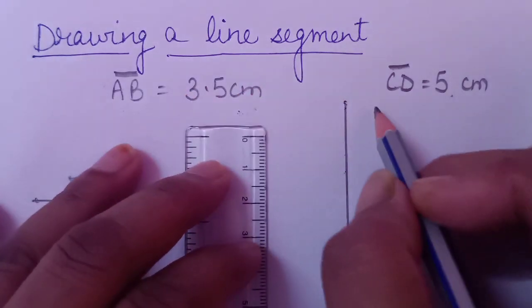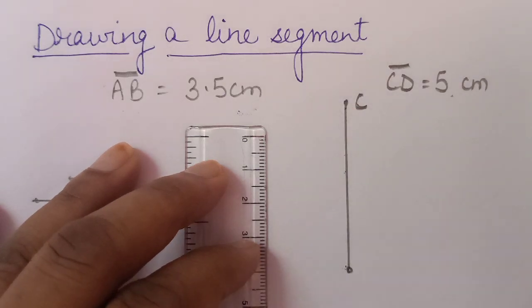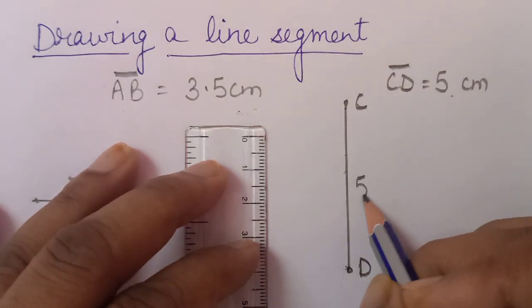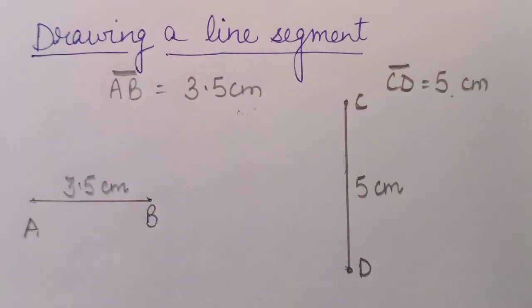This is the 0 point that will be C. And this is the 5 point that will be D. It is 5 centimetre. Is it clear children? Thank you.